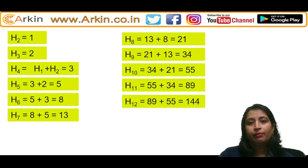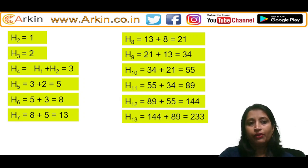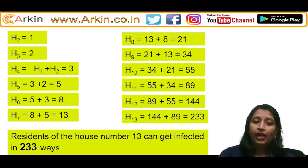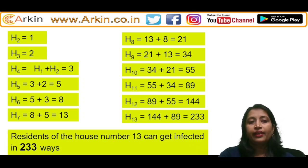Continuing: h(11) = 55 + 34 = 89, h(12) = 89 + 55 = 144, h(13) = 144 + 89 = 233. This is the answer — house number 13 can get infected in 233 ways. I hope that is clear for everyone.